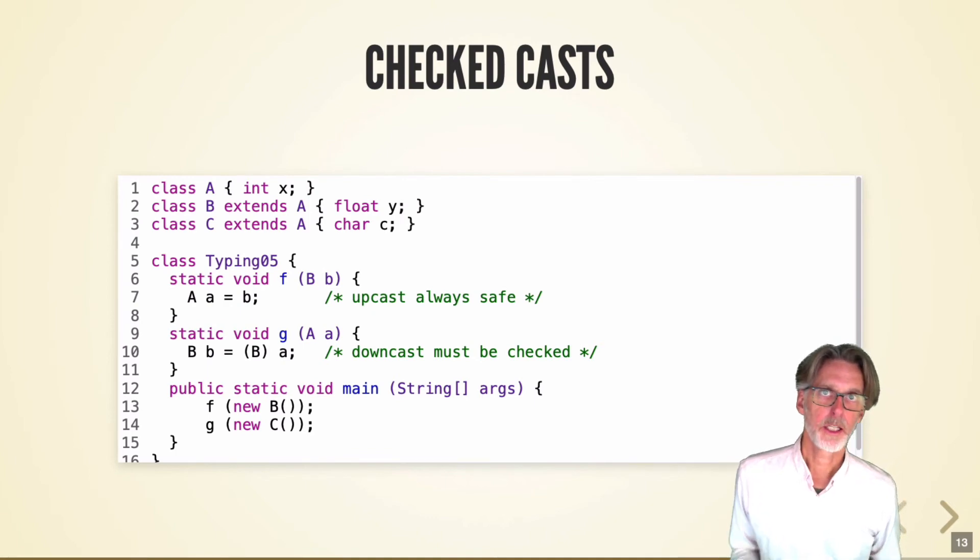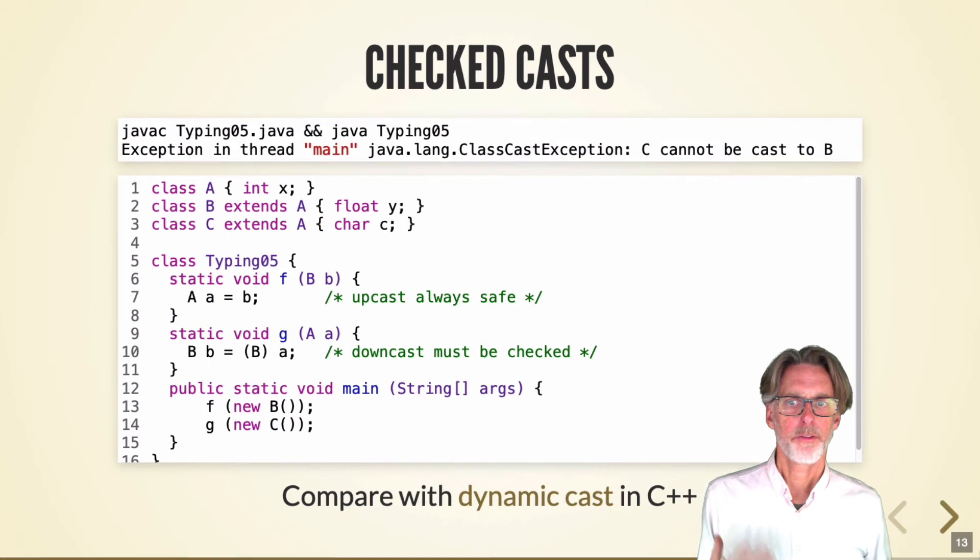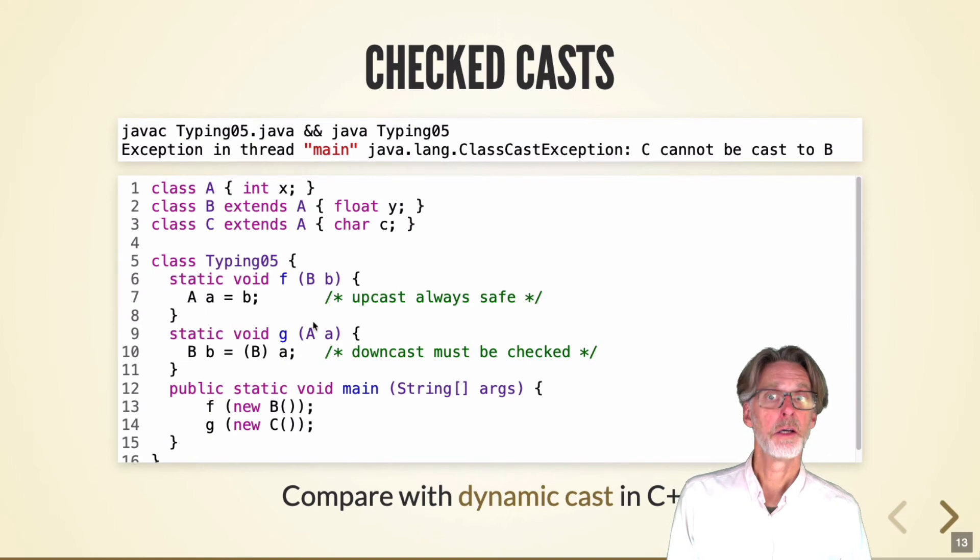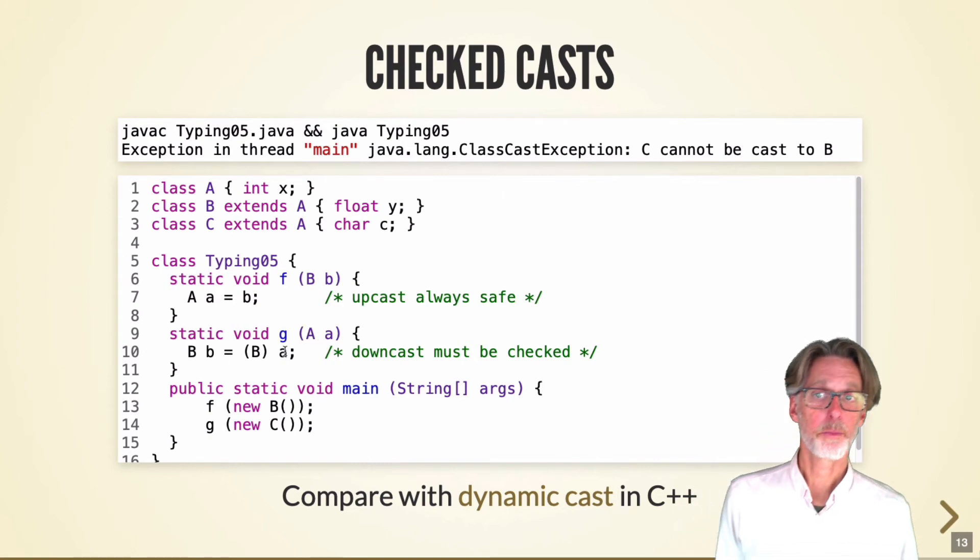Casts are also checking Java in the case that they might produce an error. Here, I've got three classes A, B, and C. A, you can think of as animals. B is birds. C is cats. And I'm going to create a function here which takes a bird. Here's a function that takes an animal. And what we're trying to do here in this function is treat the bird like an animal. What we're trying to do in this case is treat the animal like a bird. Now, it's always valid to treat a bird like an animal. But the reverse is not always valid. Because the animal may not be a bird. It may be a cat. And so, this program here, when we try to run function G on a cat, gives us an exception. Because it says, I'm sorry, cats and birds are different.